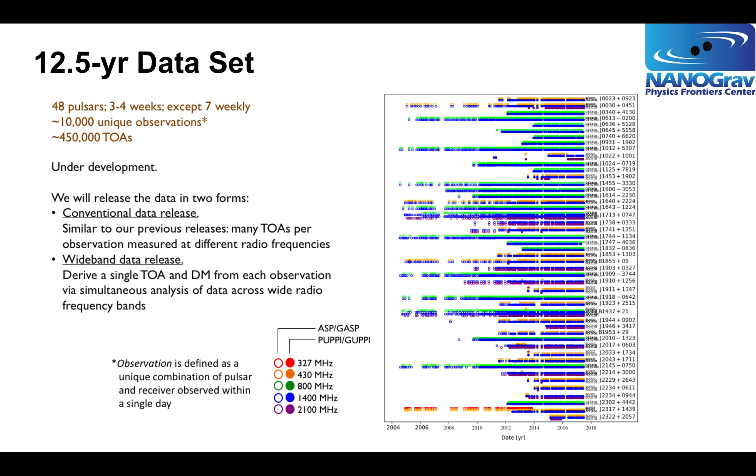We're just now starting work on the 12.5-year data set. It's an incremental increase in the number of pulsars, up to 48 pulsars. There are many more pulsars presently under observation, so the following data set will have a lot more than 48 pulsars. The 12.5-year data set is going to have around 10,000 unique observations and about 450,000 TOAs. You can see, just comparing the plot for the 11-year and the 12.5-year data set, there's a significant increase in TOAs. We're planning on releasing this data set in two forms. One is a conventional data set, where for each observation we calculate many pulse arrival times at different frequencies within data taken simultaneously, and what we call the wideband data release, where we derive a single TOA and a perturbation in the pulsar dispersion measure from all the data from a given receiver.